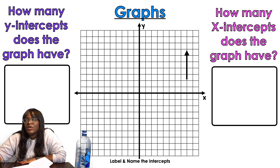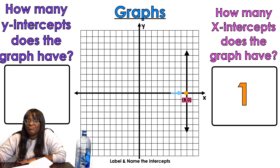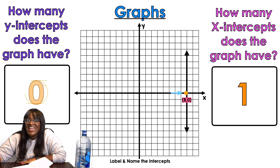Okay, so now we're gonna do this vertical line. Ooh, how many x-intercepts does it have? Just this one. And then how many y-intercepts does it have? None. Very good, very good.